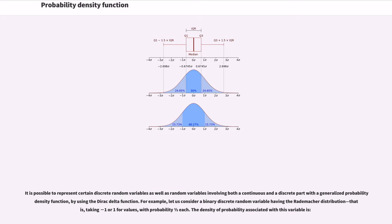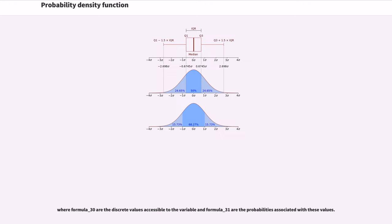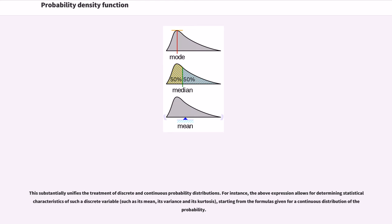It is possible to represent certain discrete random variables as well as random variables involving both a continuous and a discrete part with a generalized probability density function, by using the Dirac delta function. For example, consider a binary discrete random variable having the Rademacher distribution — that is, taking values −1 or +1 with probability 1/2 each. More generally, if a discrete variable can take N different values among real numbers, then the associated probability density function is a sum of weighted Dirac deltas. This substantially unifies the treatment of discrete and continuous probability distributions.